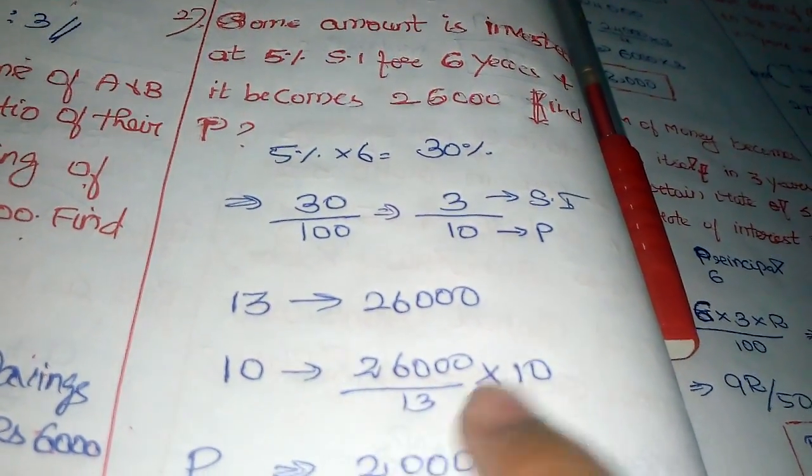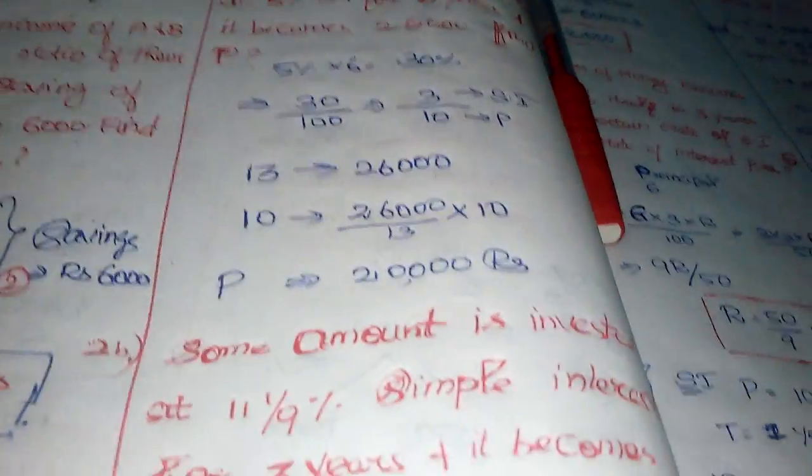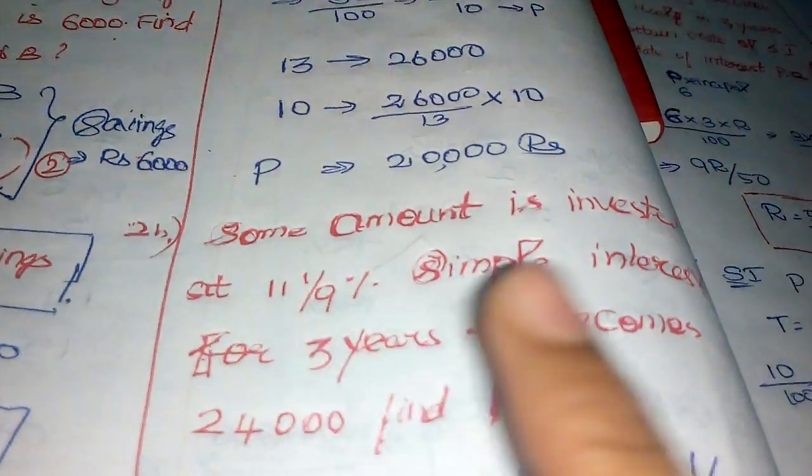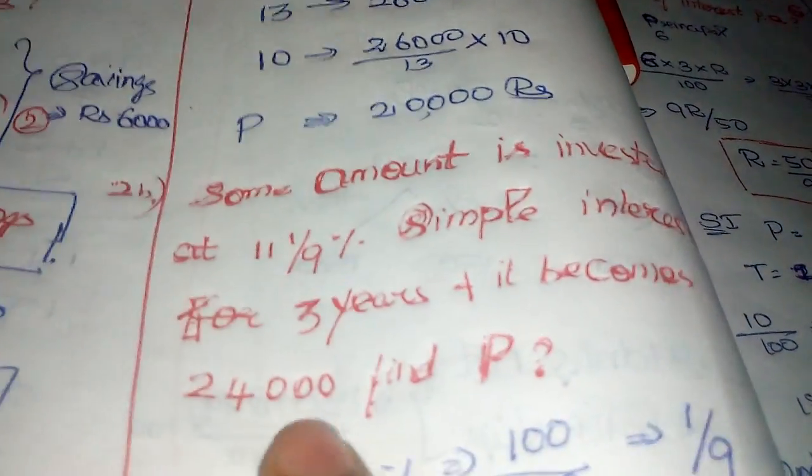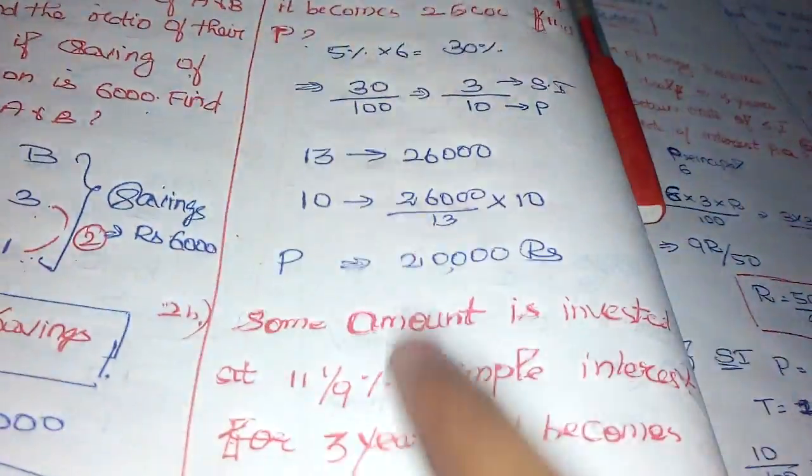Same model: Some amount is invested at 11 and 1/9 percentage simple interest for 3 years, and the amount becomes 24,000. Find the principle.